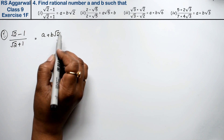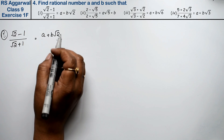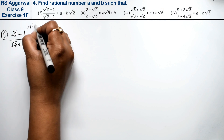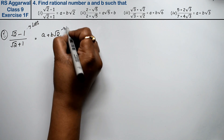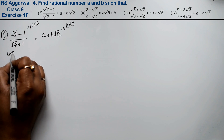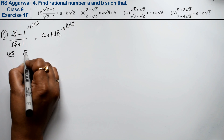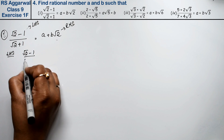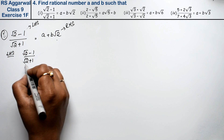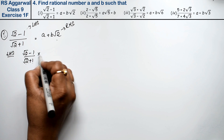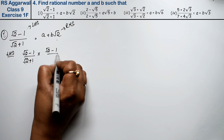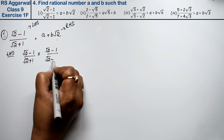We have to find the A and B values. The left-hand side is root 2 minus 1 upon root 2 plus 1. We will rationalize this. We multiply by root 2 minus 1 upon root 2 minus 1.